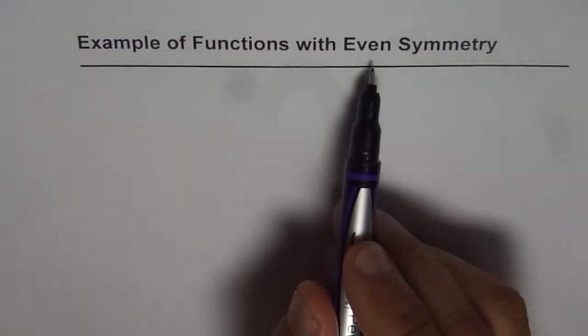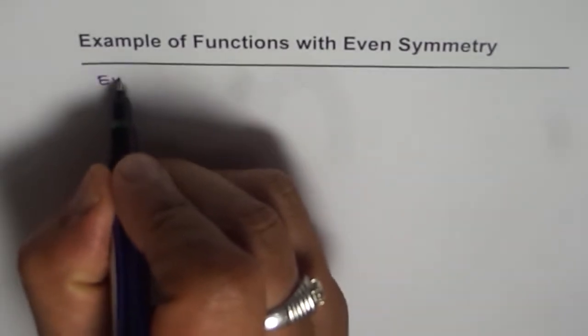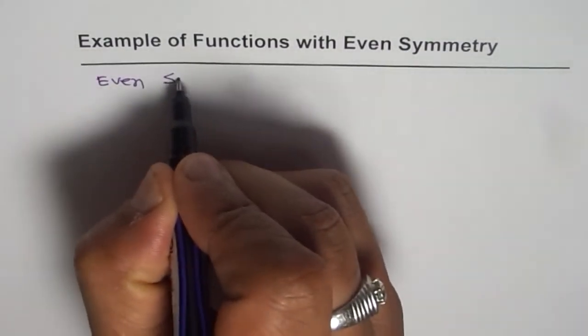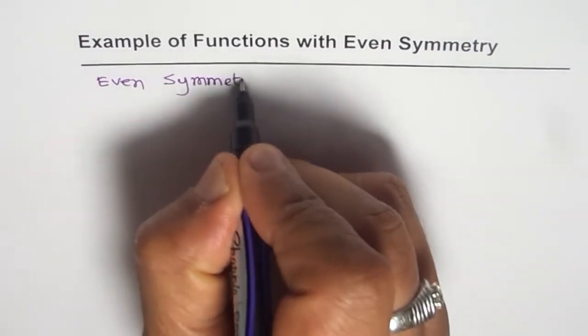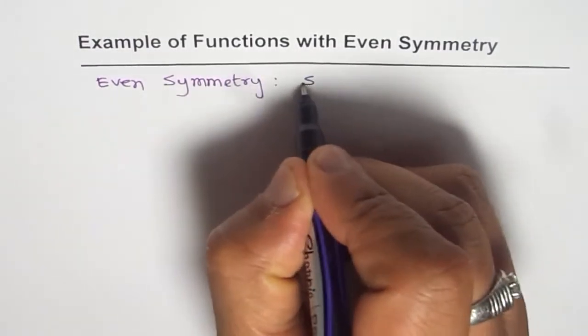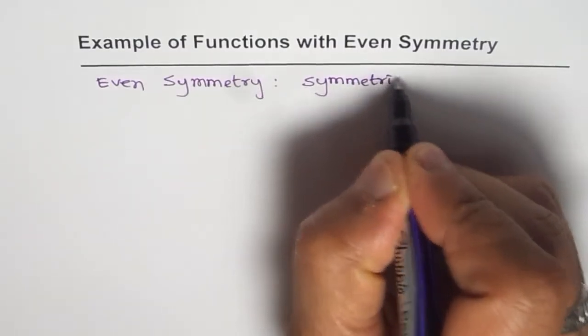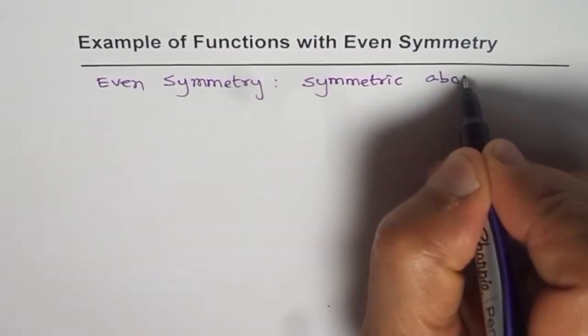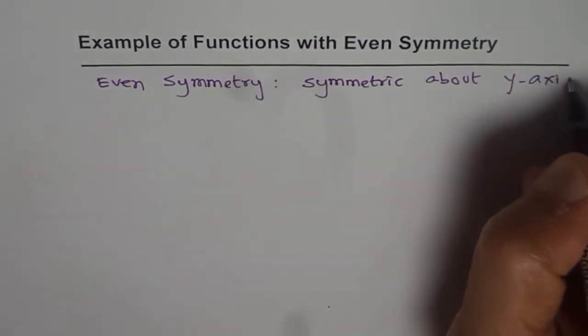Now when we say even symmetry, what does it mean? Even symmetry basically means it is symmetric about a line, and that line is the y-axis. That is what it means.